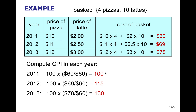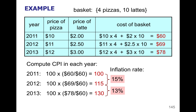To find the inflation rate, we find the rate of change between any two years. Looking at the difference between 2011 and 2012, the inflation rate between those years is 15% — remember, it's the difference over the earlier value. The difference between 2012 and 2013 is 13%.